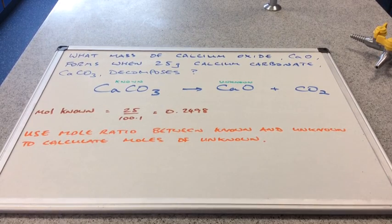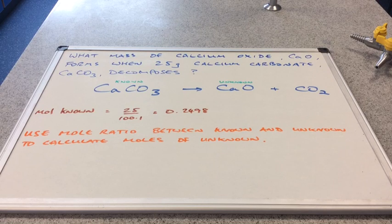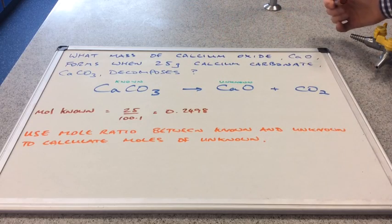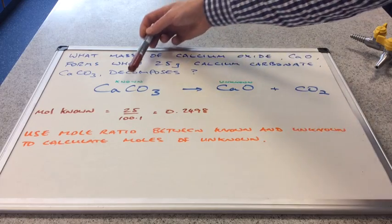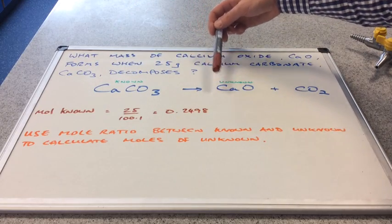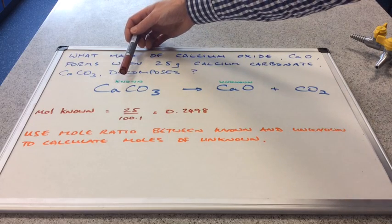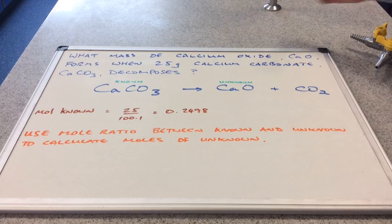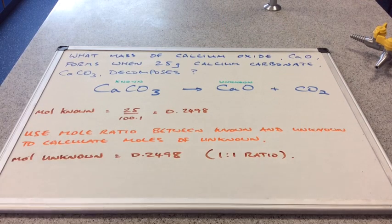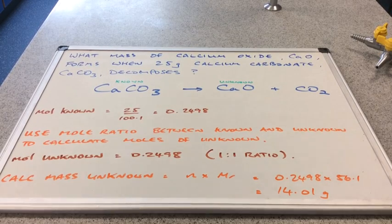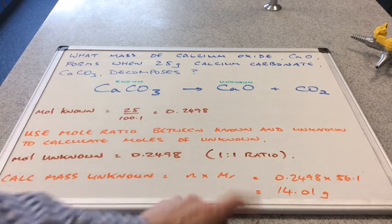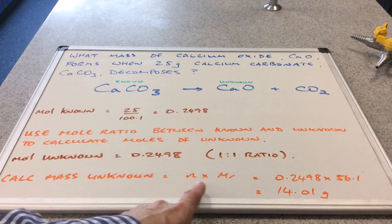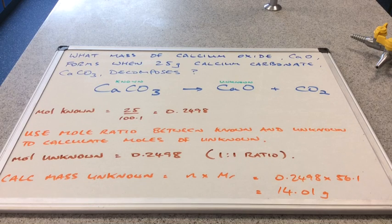Once we know the moles of the known, we then use the mole ratio in the chemical equation between the two substances to establish how many moles of the unknown we can make. The mole ratio between the two chemicals is 1 to 1, so one mole of calcium carbonate decomposes to form one mole of calcium oxide. Moles of unknown equals moles of known. Then the mass of unknown equals moles times MR, coming out at 14.01 grams.